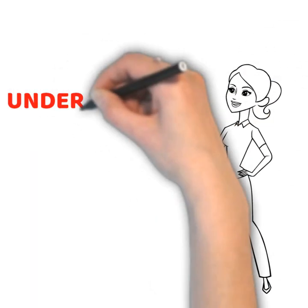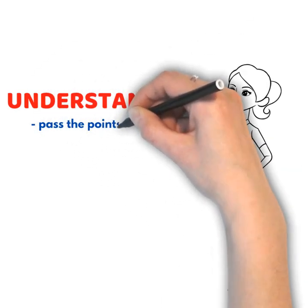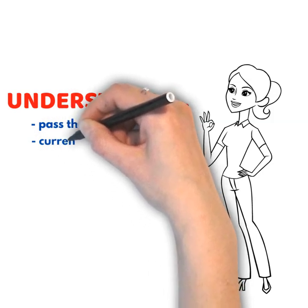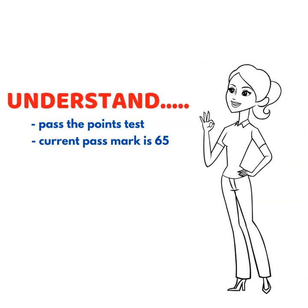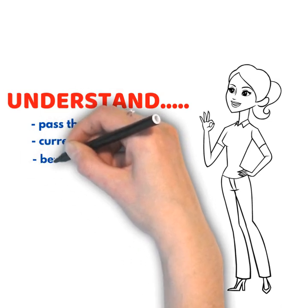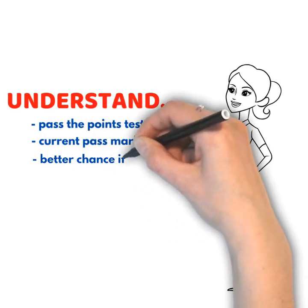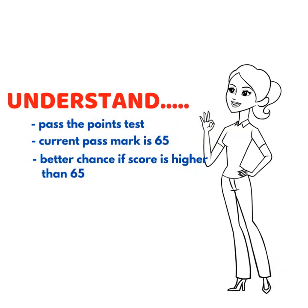You need to understand that all skilled visas require an applicant to pass the points test before lodging an EOI. The current pass mark is 65, but you will have a better chance of getting invited to lodge a visa application if your score is higher than 65. At the moment, most invitations in Subclass 491 range from 75 to 95 points.